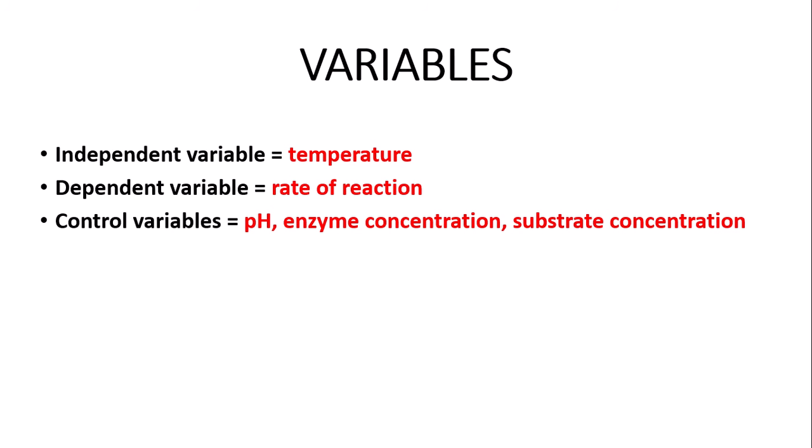The control variable, which is the thing that you have to keep constant for the results of the experiment to be valid, will be pH, enzyme concentration, and substrate concentration. These are all things that you need to keep the same because they could affect the rate.